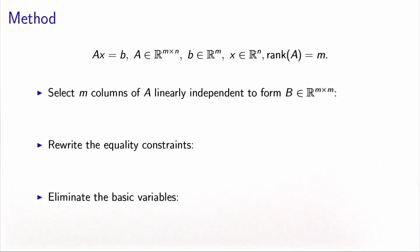Let's see how we can do this in a systematic way. We have the system of equations that characterize the constraint, Ax equals b. A is a matrix of m rows and n columns. b is a vector of R^m, and x is a vector of R^n. We assume that the rank of the matrix is equal to m, so we have removed all the redundant constraints, if any.